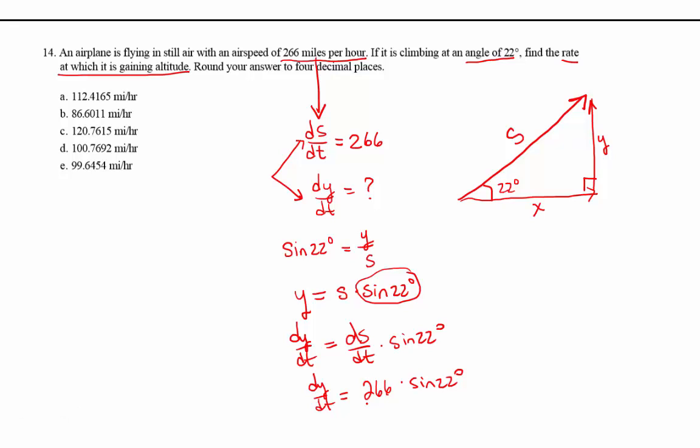Is that supposed to be the answer? Yeah, I think so. 266. Make sure it's in degrees. Yeah, make sure your calculator's in degrees. That's a good point. Good point. 266 times the sine of 22. So that's approximately 99.6454-ish, and that was in the Y was being... Since we're doing miles per hour, the Y was... Well, everything was miles.